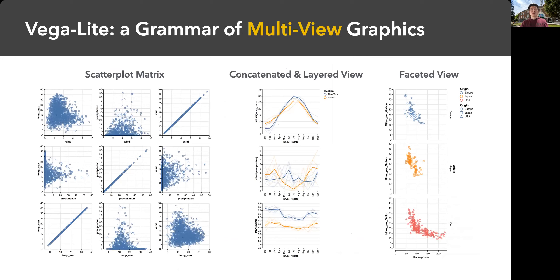Here are a few more showing multi-view graphics. These are a bit different from a simple dashboard. On the left we have the scatterplot matrix — actually a matrix of scatterplots — nine small scatterplots put together to form a more complex visualization. In the middle is a concatenated and layered view — three line charts put together to form one visualization. Finally on the right is a faceted view, where three simple scatterplots are combined together to form a more complex visualization.